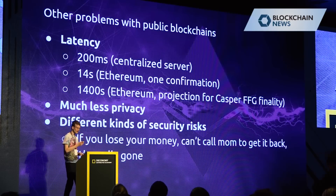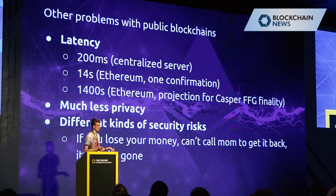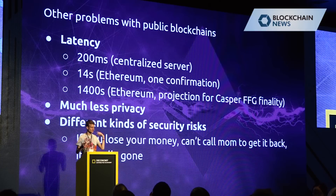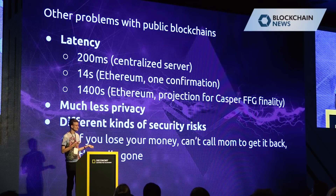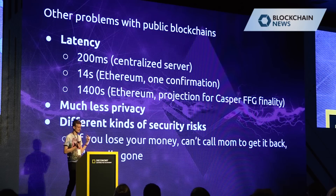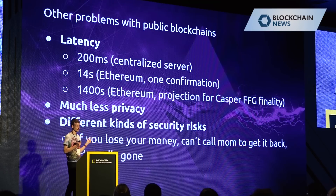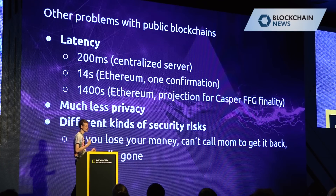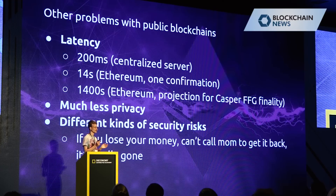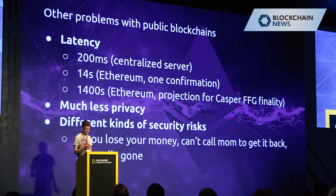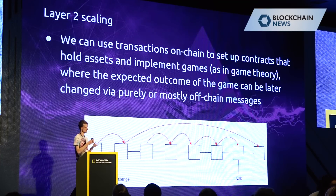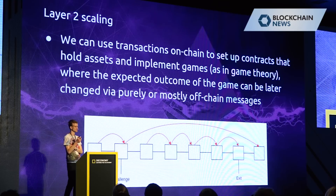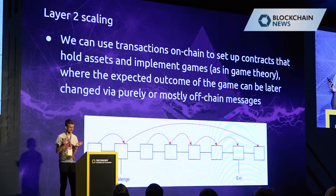Other problems with public blockchains beyond execution efficiency include less latency — 200 milliseconds with a centralized service versus 14 seconds for one confirmation on Ethereum and an expected roughly 33 minutes to get finality in the first version of Ethereum's Casper proof-of-stake system. Much less privacy — all the data is public. And different kinds of security risks: if you lose your money, you can't call anyone to get it back. Your money is really gone. So what kinds of approaches can we use to try to alleviate some of these issues?